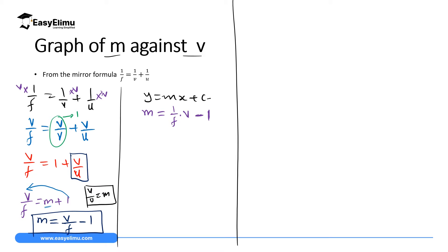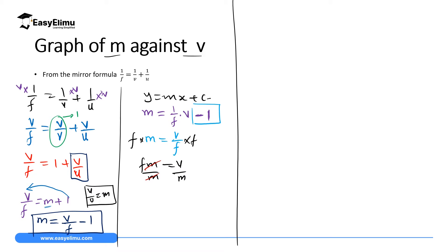Setting aside the negative 1 and making f the subject of the formula from m = v/f: multiply both sides by f, giving fm = v, then divide by m, giving f = v/m. This focal length equation — f = v/m — is equation 1. Take note of it because we are going to compare it with another equation very soon.